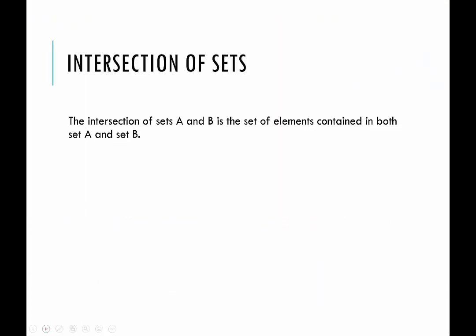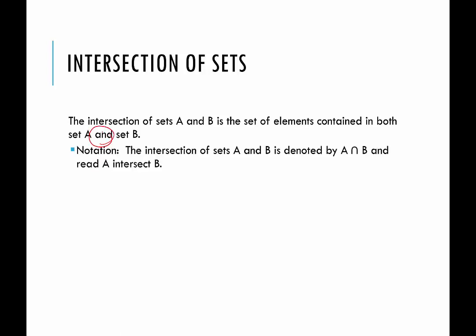First, we're going to talk about the intersection of two sets. The intersection of sets A and B is the set of elements contained in both set A and set B. The thing we want to keep in mind here is 'and' — it has to be in both. The notation for the intersection of two sets uses this symbol here, and we read that as 'A intersect B.' The way I like to remember this symbol is it almost looks like an N, so it's like A and B — what's in A and B?